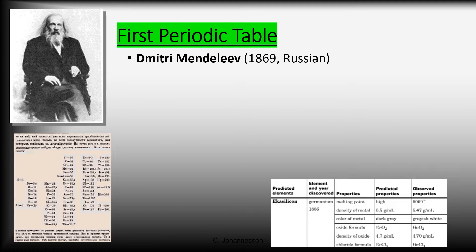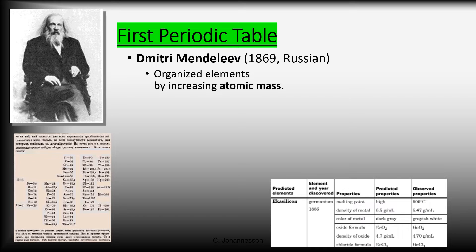Dmitry Mendeleev was the guy who came up with the first periodic table. He found a way to start organizing these elements. This is important: he organized these elements by atomic mass. You need to know that Mendeleev organized elements by increasing atomic mass and that he was the first one to come up with a periodic table.